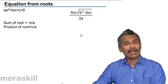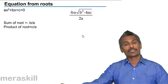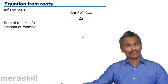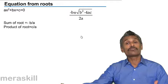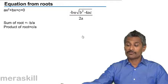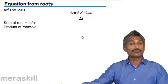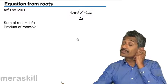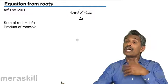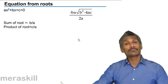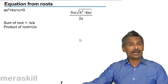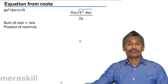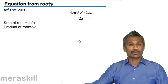These are all simple applications of the concept of how to find the nature of roots from the value of b squared minus 4ac. Now suppose it's the other way around — suppose the roots are given, then how can we find the equation?